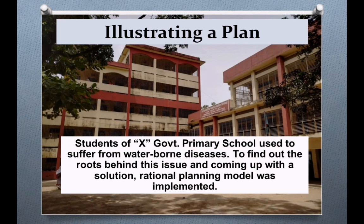We'll now illustrate a plan based on the rational planning model. Students of a certain government primary school used to suffer from waterborne diseases. To find out the roots behind this issue and come up with a solution, the rational planning model was implemented.